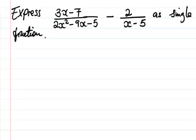Let's see the solution of this question. We need to express (3x minus 7) divided by (2x squared minus 9x minus 5), then subtract that fraction with 2 divided by (x minus 5), as a single fraction.